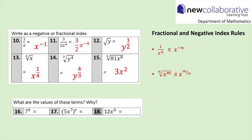For the three questions at the bottom: when we raise a value to the power of 0, we always get 1, so 7 to the power of 0 is 1. Moving on: 5x to the power of 7, all to the power of 0, is also 1, because we are raising the whole expression to the power of 0. In the final question, 12 multiplied by x to the power of 0 means 12 times 1, which is 12.